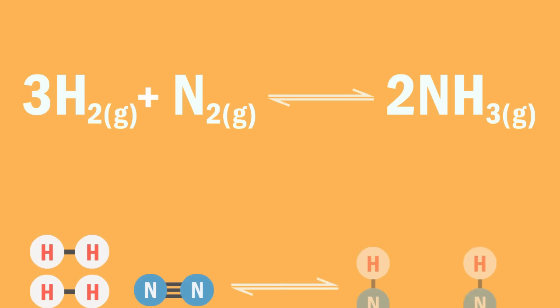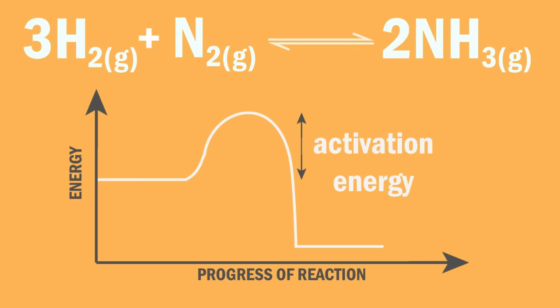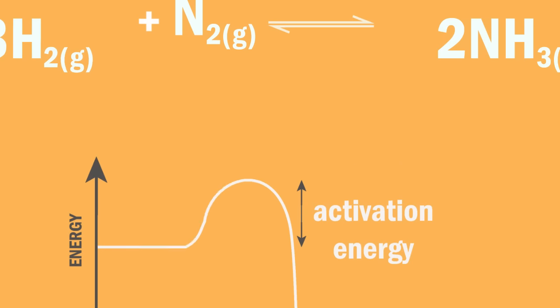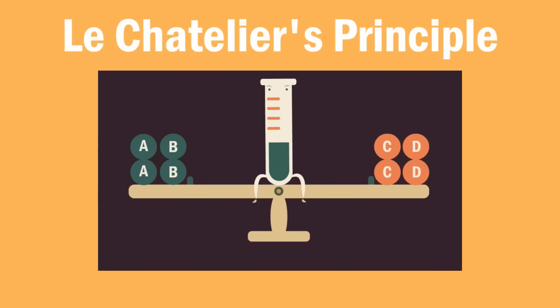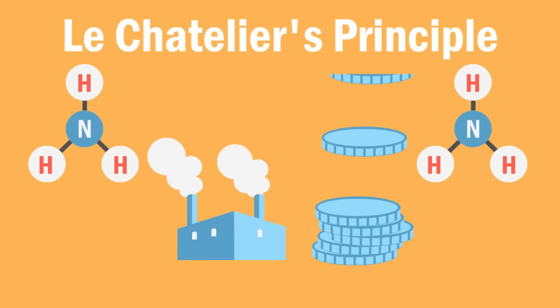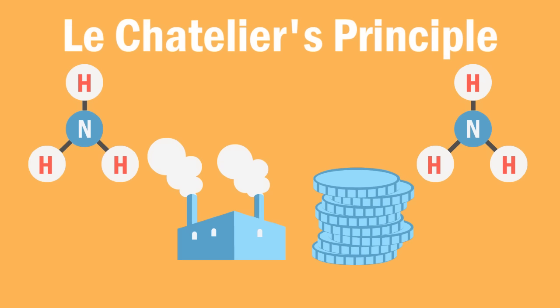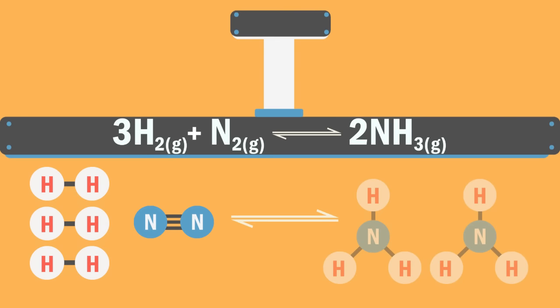Let's revisit this reaction again. Note that this is a reversible reaction and that the forward reaction is exothermic. The Haber process uses Le Chatelier's principle to maximize ammonia production while keeping operating and production costs in mind. Le Chatelier's principle tells us that increasing pressure will favor the side with fewer moles — in our case, the production of ammonia.